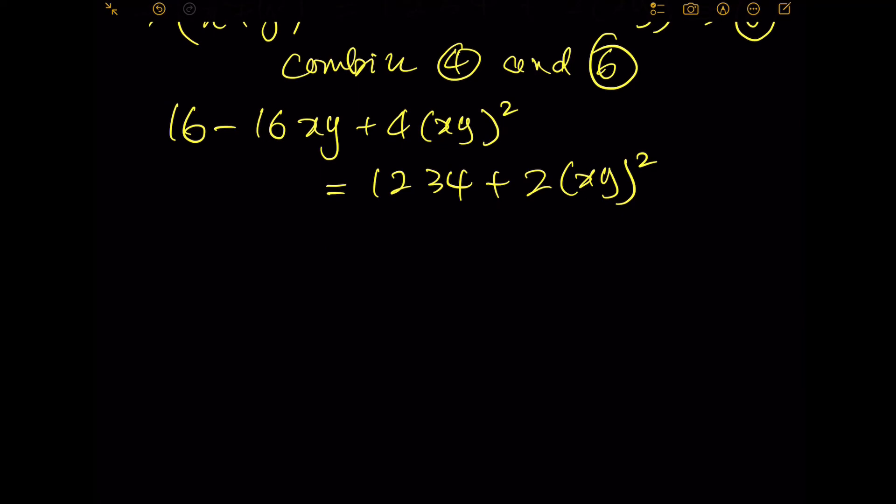You have 2(xy)^2 minus 16xy minus 1234 plus 16, when you move to the other side. This constant is minus 1218, equals 0. We can divide everything by 2, so you have (xy)^2 minus 8xy minus 609 equals 0.